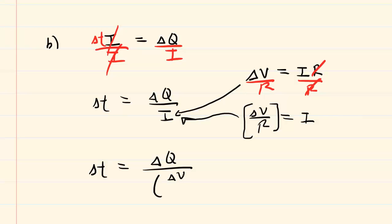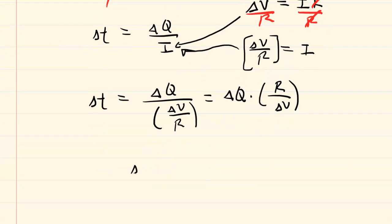Now, we end up with a complex fraction, which is a little bit challenging to work with, but we're just going to apply keep change flip. So we keep the delta Q. We change the division to multiplication. And then we flip the fraction over to make it R over delta V. So these would be the correct quantities that we would need to find the time interval for part B of this question.